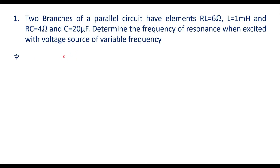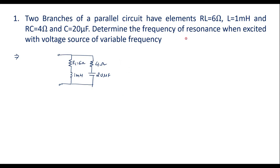It is a parallel resonant circuit which consists of RL in series with XL, and RC in series with XC. Here RL is 6 ohm, L is 1 mH, RC is 4 ohm, and capacitance is 20 microfarad. There is a voltage source connected in parallel with variable frequency. We need to calculate ω₀, the resonant frequency in radians per second, or f₀ in hertz.